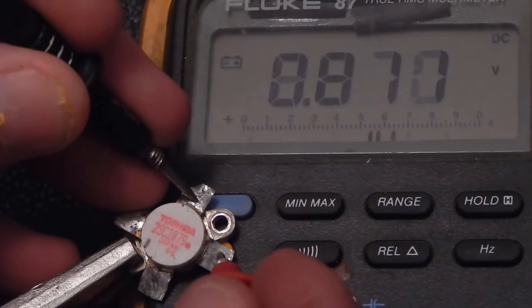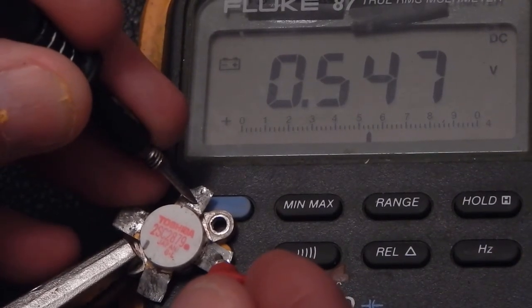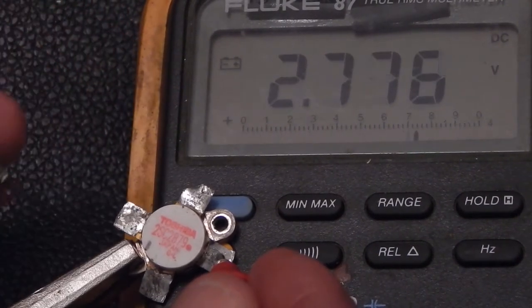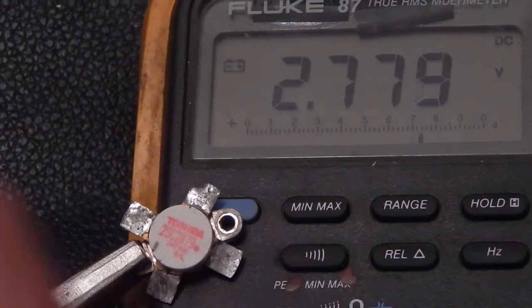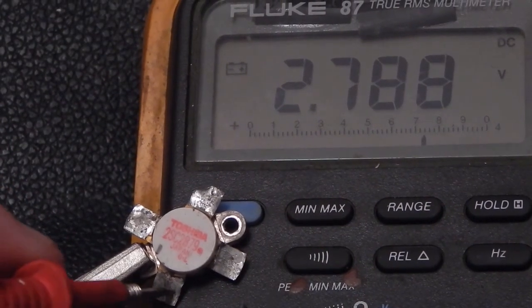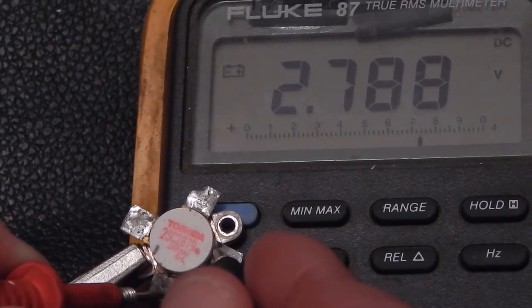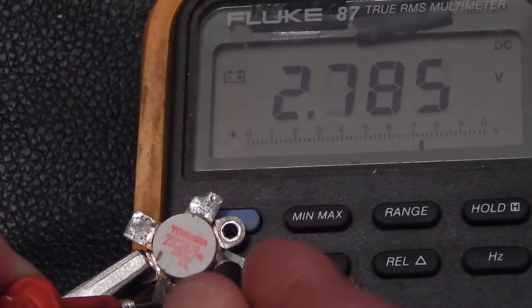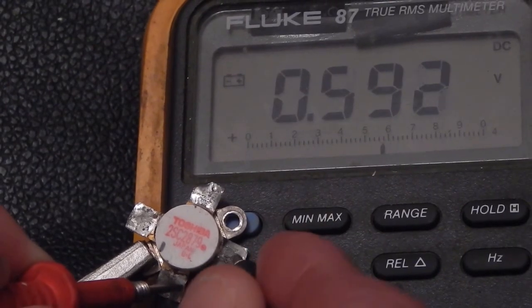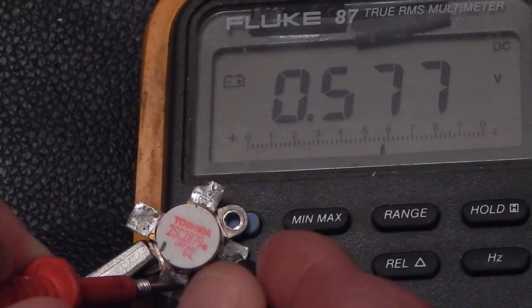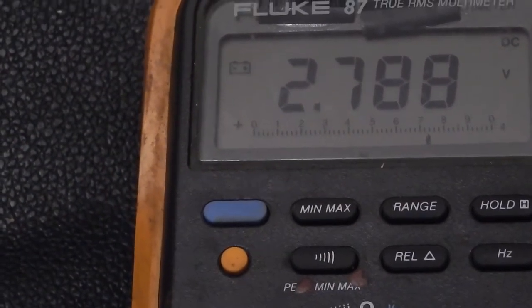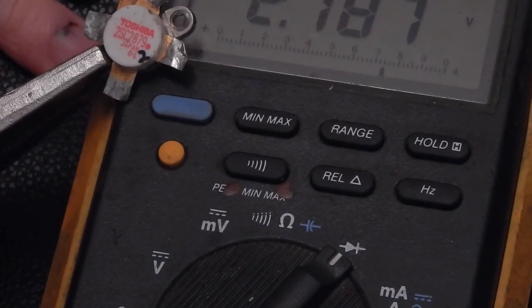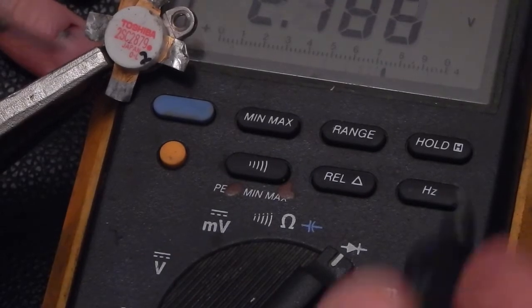Collector to emitter reads 0.547. Base to emitter, we're open. Reverse base to emitter, 0.577. So that transistor appears to be good. Transistor number two - first across the two emitters.